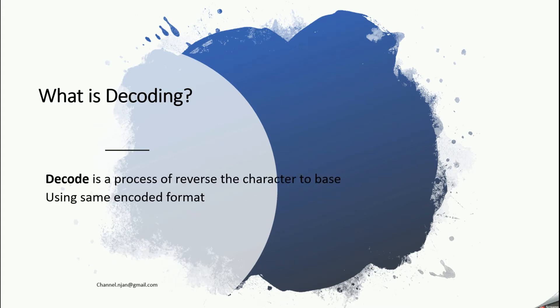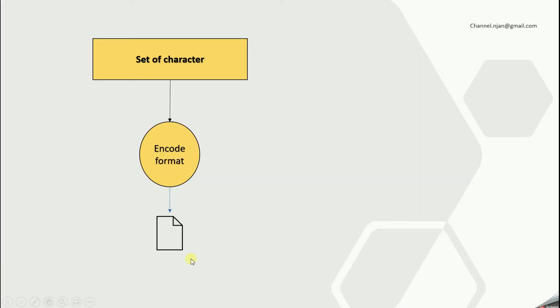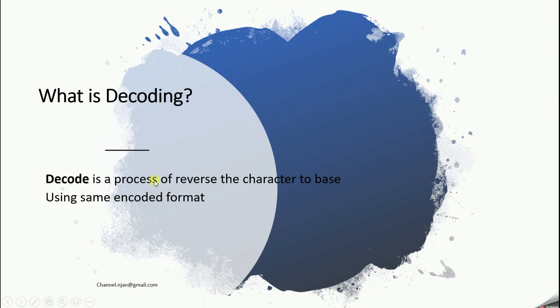What is decoding? Decoding is the process of reversing characters back to base using the same encoder format. For example, if you already encoded one string, this is the reverse process — your encoded string gives the input to the encoder format, and it will be deserialized back to the base characters. So decoding is the process of reversing the character to base using the same encoder format. I will show you in an example so you will get a clear idea.